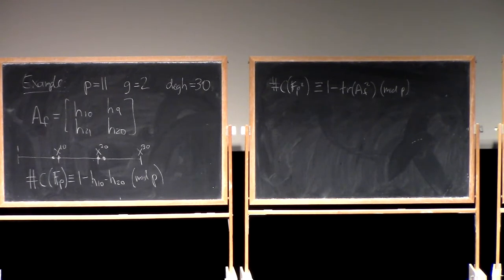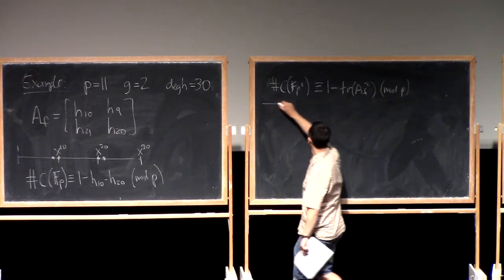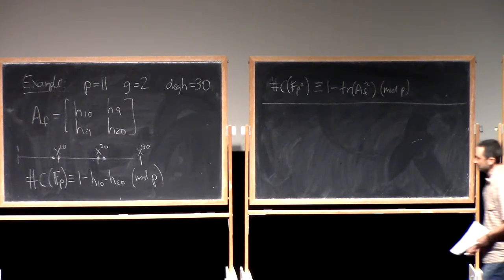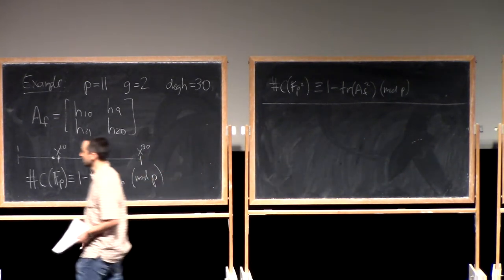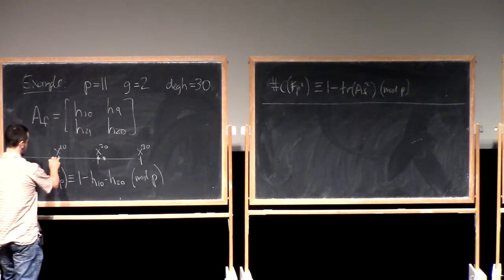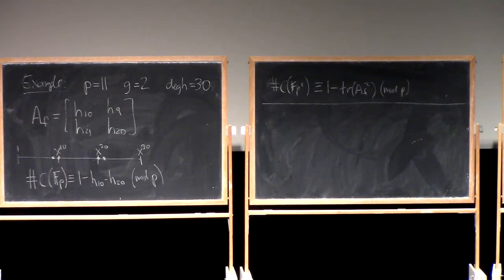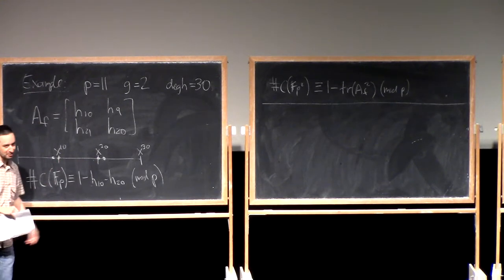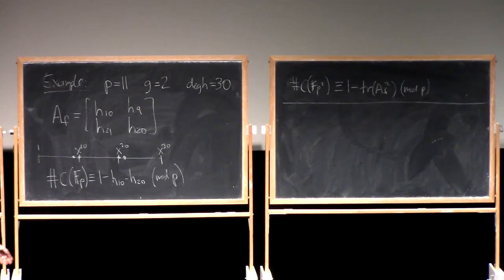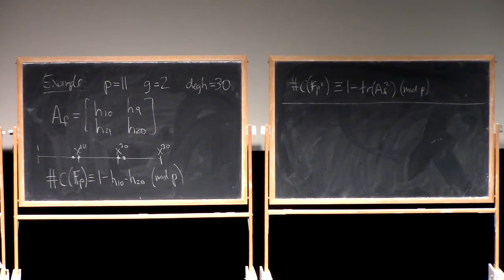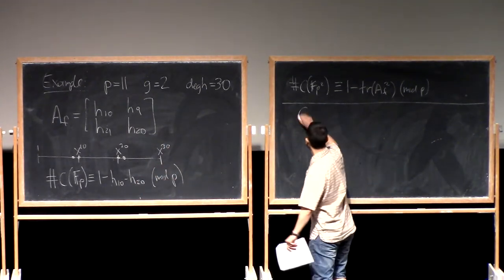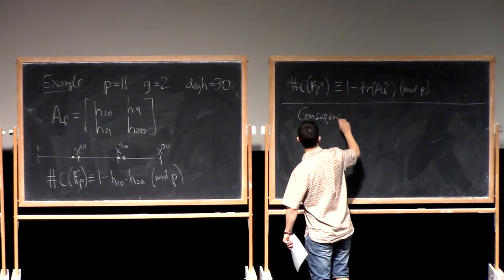We've got this trace formula — it's really great. You can already see an algorithm coming out of this: if you calculate these coefficients of h, you can calculate the number of points using the formula. A lot of the rest of the course is about how to calculate just these specific coefficients more efficiently than naively multiplying out the polynomial. But before that, I want to talk about consequences of the trace formula for the L-polynomial.